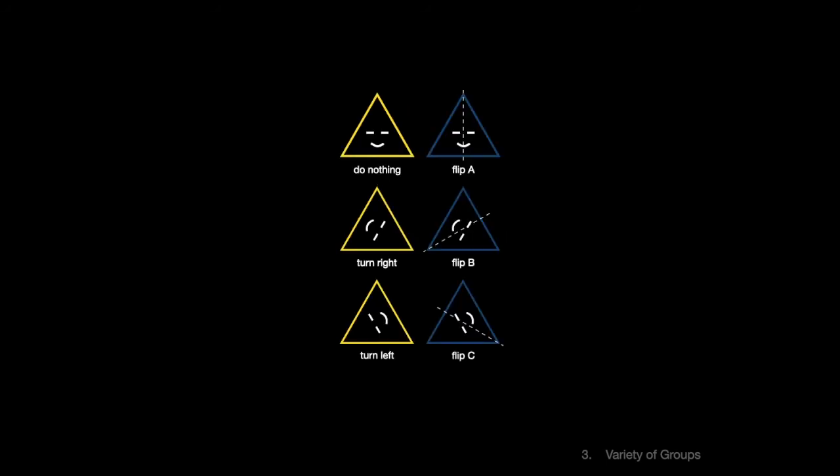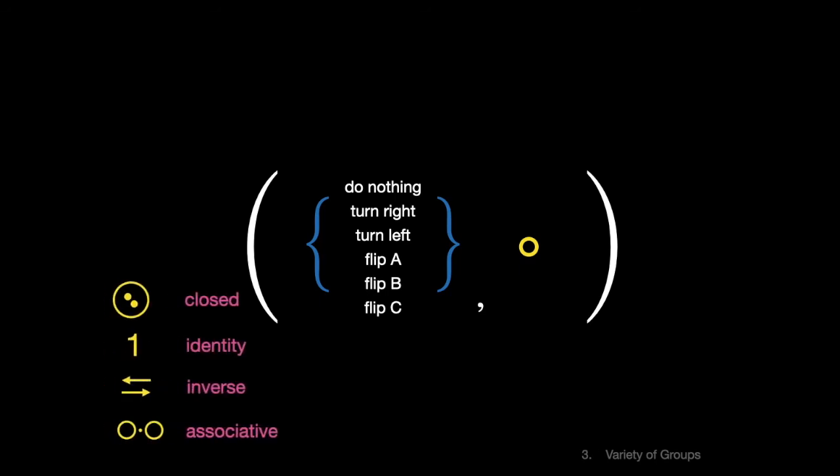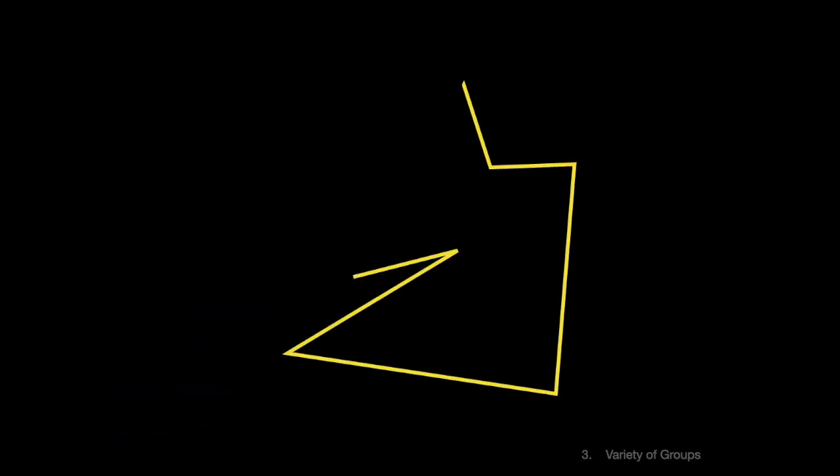How did we make this group? We collected all the symmetries of a triangle, threw in the composition operation, and checked that the four axioms were met. We can play this game with any shape, though some of the resulting groups are more interesting than others. Take Mr. Squiggle. Mr. Squiggle is a wonderful polygon, but he has no reflexional symmetries, and he has no rotational symmetries. His only symmetry is the identity.